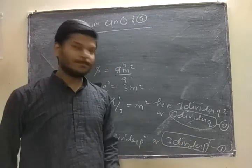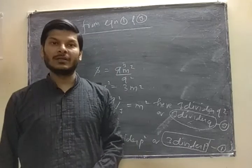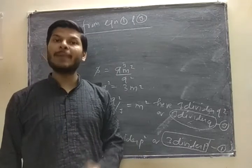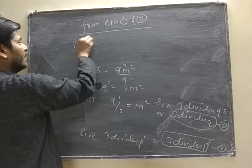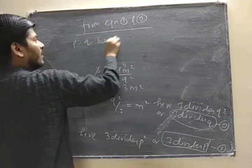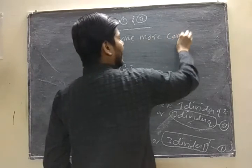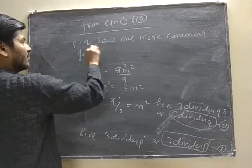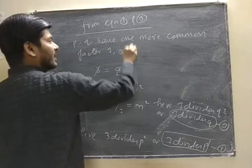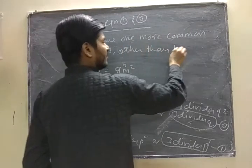P and Q have one more common factor, 3 other than 1. Hence...